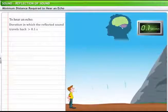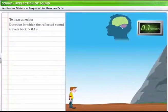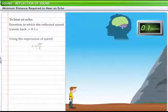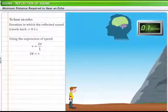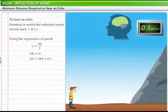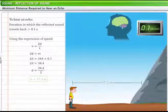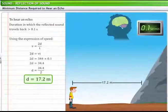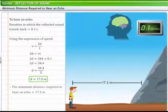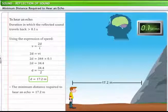To hear the echo, the duration in which the reflected sound travels back should be at least 0.1 seconds. Therefore, by using the expression of speed, the distance traveled by the sound wave is equal to the product of the speed of the sound and the time for which a sound persists in our brain. On substituting the values and simplifying, we get the distance is equal to 17.2 meters. Therefore, the minimum distance required to hear an echo is 17.2 meters.